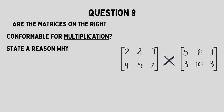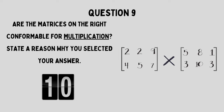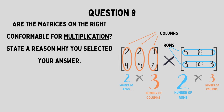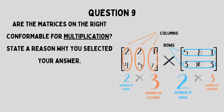Now we have our final question, number nine: Are these matrices conformable for multiplication? No, these are not conformable for multiplication because we have three columns in the first matrix and two rows in the second matrix — they are not equal. In order to multiply matrices, those two middle numbers must be equal when we state the order of the matrix. Remember, the order of the matrix must go in the form of rows by columns. When we have the two numbers in the middle being equal to each other, then they are conformable. If not, we cannot multiply them.